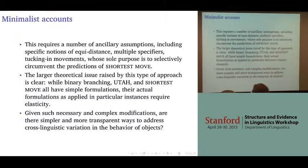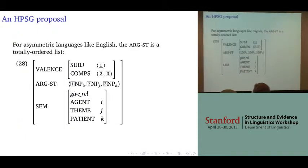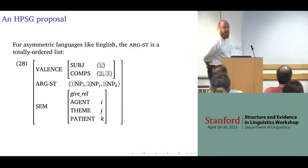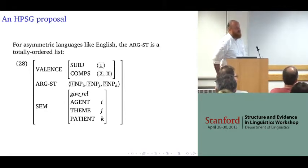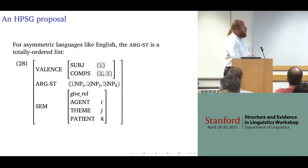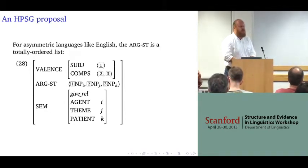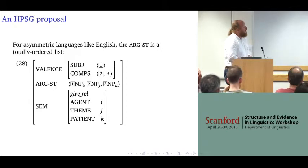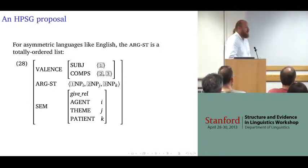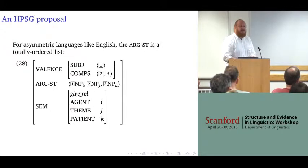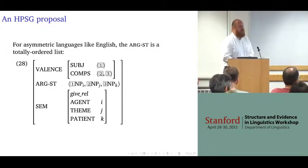When we turn to how we might cover something like this in HPSG, the first question is: where do the asymmetries come from in asymmetric languages? HPSG shares the property with minimalism that we don't take grammatical functions as theoretical primitives.